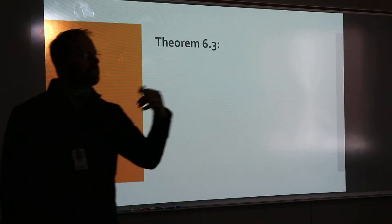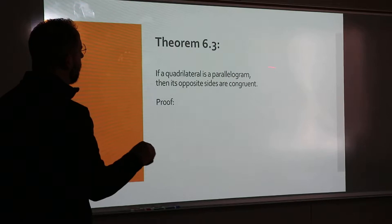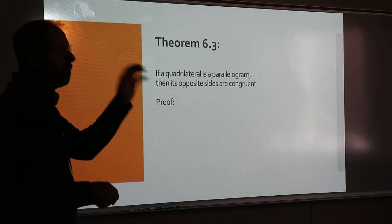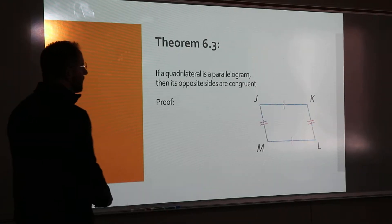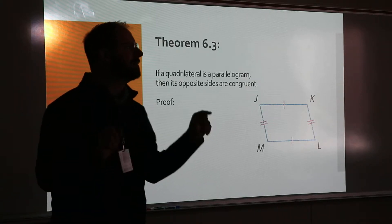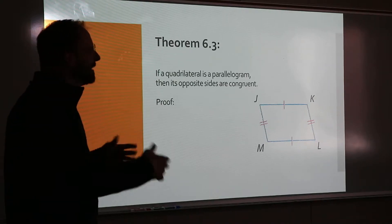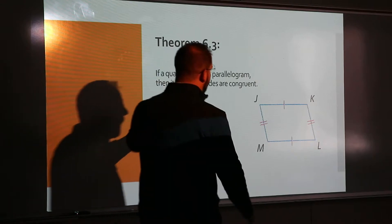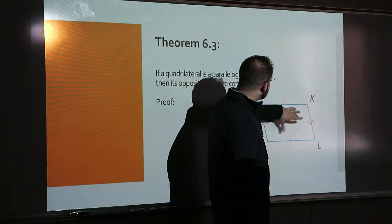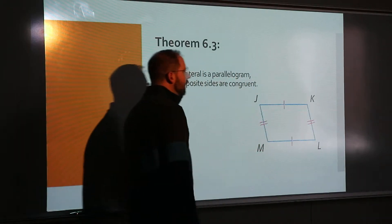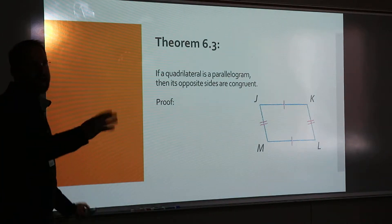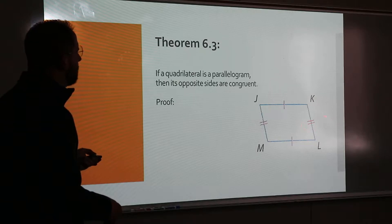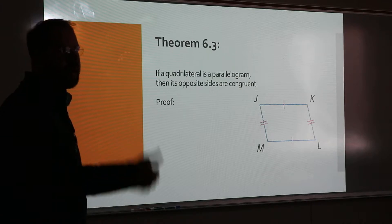The first theorem we had, Theorem 6-3, we called the opposite sides theorem. In a parallelogram, the opposite sides are equal in length. Anytime you have a parallelogram, the opposite walls have to be the same size. To prove it is actually challenging — you draw a diagonal, prove the triangles are equal, then use corresponding parts to show the walls are the same length. So if one wall is 7 inches, the opposite wall is also 7 inches.